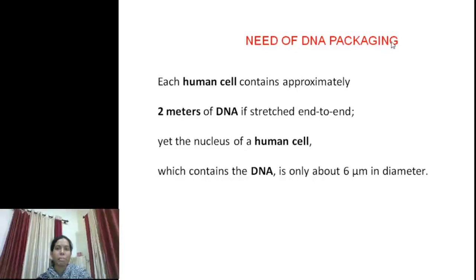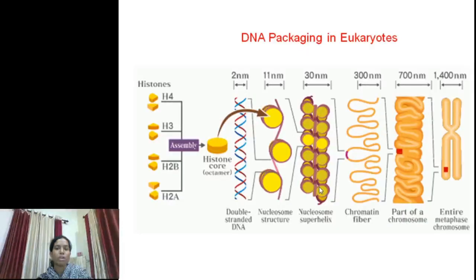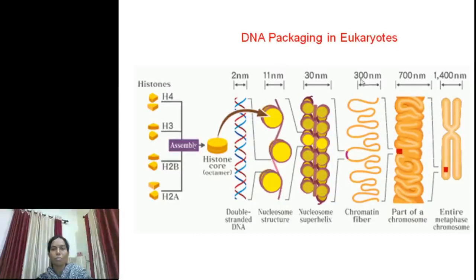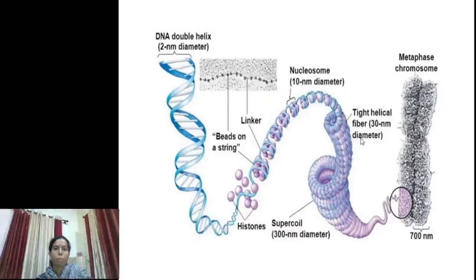Why is there a need for DNA packaging? The length of human DNA is approximately 2 meters if stretched end to end, and the diameter of the nucleus is just 6 micrometers. So DNA undergoes coiling and supercoiling to fit inside. This diagram indicates how coiling and supercoiling take place. The double-stranded DNA coils around proteins in several steps: first an 11 nm fragment, then 30 nm, then 300 nm, then 700 nm, and finally a 1400 nm fragment — that is the chromosome.